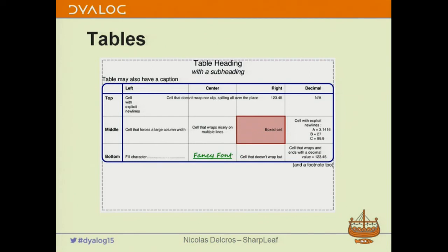The other big part of Sharpleaf is tabulation — basically printing tables to paper. Here's a typical table. You're in a grid and you're going to move around cells, rows, and columns, flowing stuff into the cells and rows as you go. There are many strategies to fill a table and you can use any.